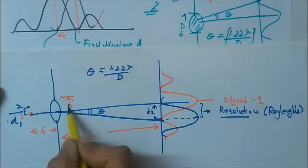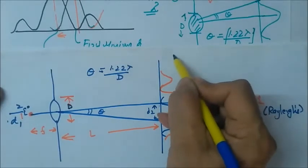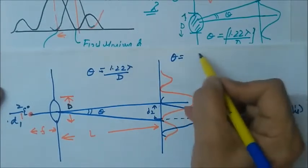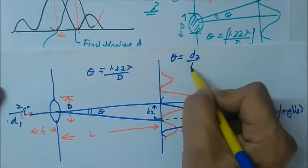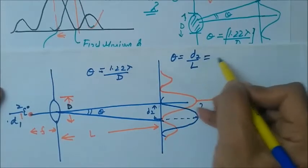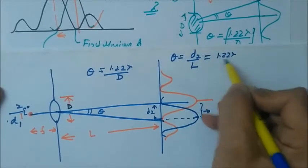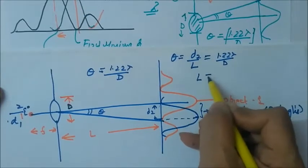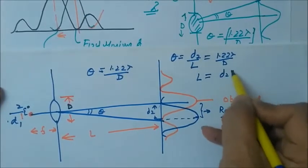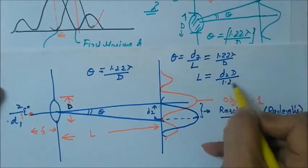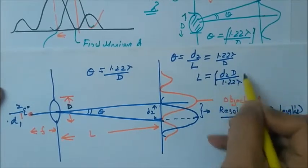Theta is also equal to D2 upon L. By this we can find out L equals D2 times D upon 1.22 lambda.